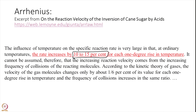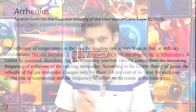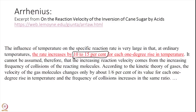Arrhenius asks: what is going on at the molecular level to explain this? One argument is that at higher temperature the thermal speed increases — Boltzmann has told us as much — so maybe molecules are simply moving faster and therefore reacting faster. But Arrhenius very beautifully argues against it. He says the increasing reaction velocity cannot come from increasing frequency of collisions, because according to kinetic theory of gases the velocity of gas molecules changes by only 1/6th percent of its value per Kelvin — that cannot explain an increase of 10 percent.